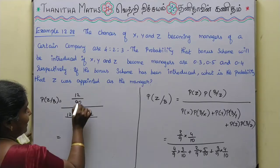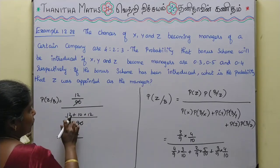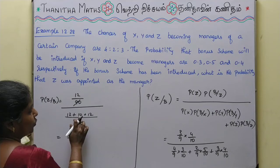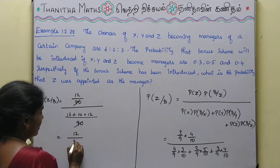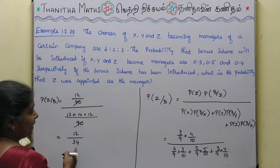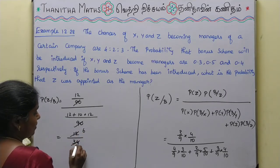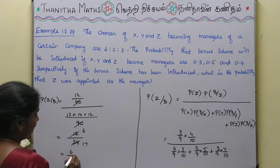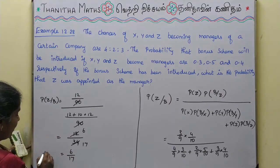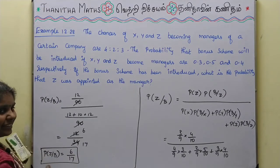So the expression becomes 12 divided by 12 plus 10 plus 12. That is 12 divided by 34. Cancelling the common factor of 2, we get 6 by 17. Therefore P of Z given B equals 6 by 17. This is our required answer.